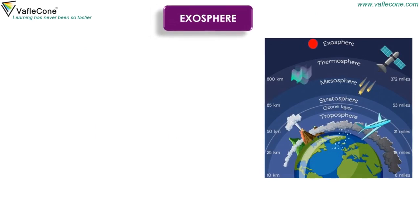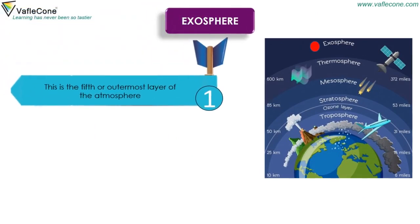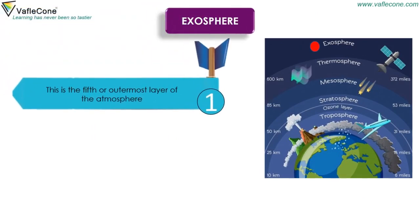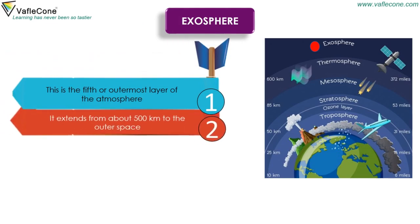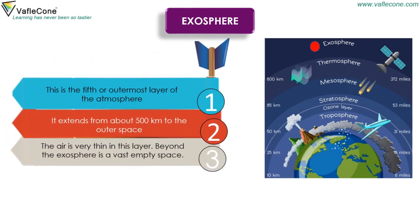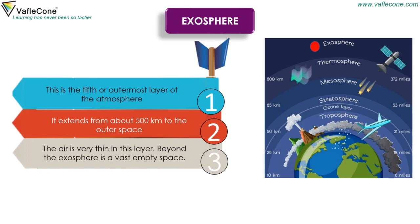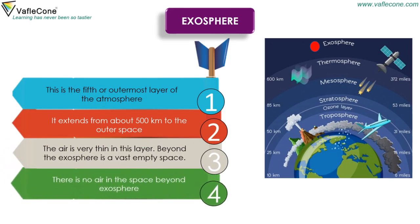Exosphere is the fifth or outermost layer of the atmosphere. It extends from about 500 kilometers to outer space. The air is very thin in this layer. Beyond the exosphere is a vast empty space, and there is no air in space beyond the exosphere.